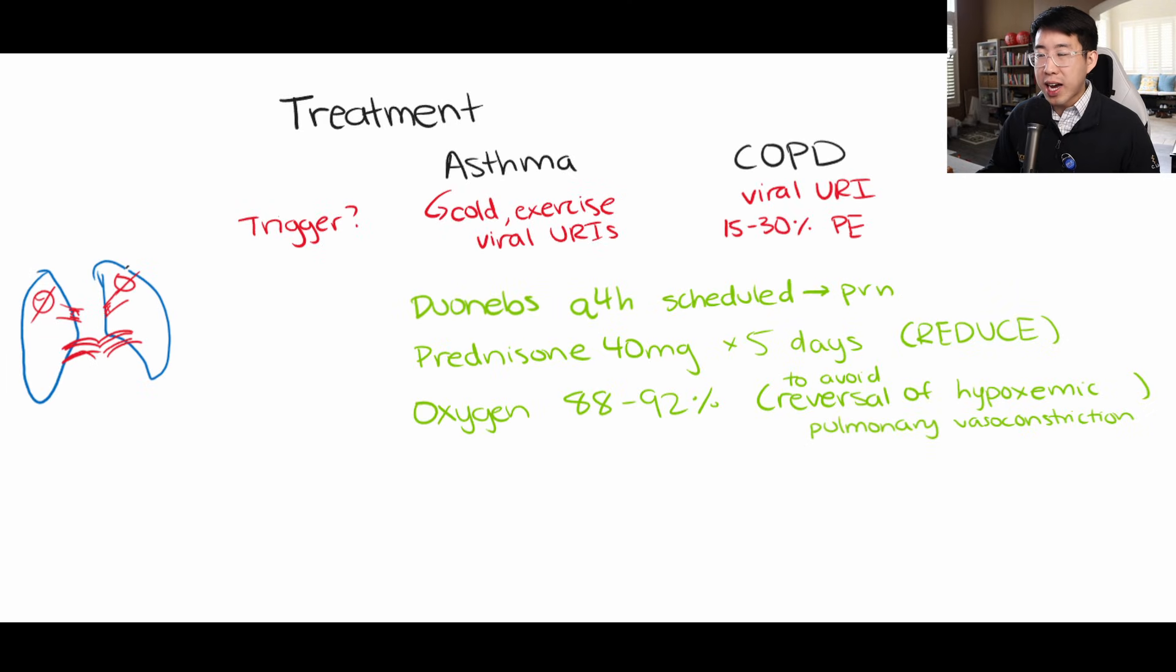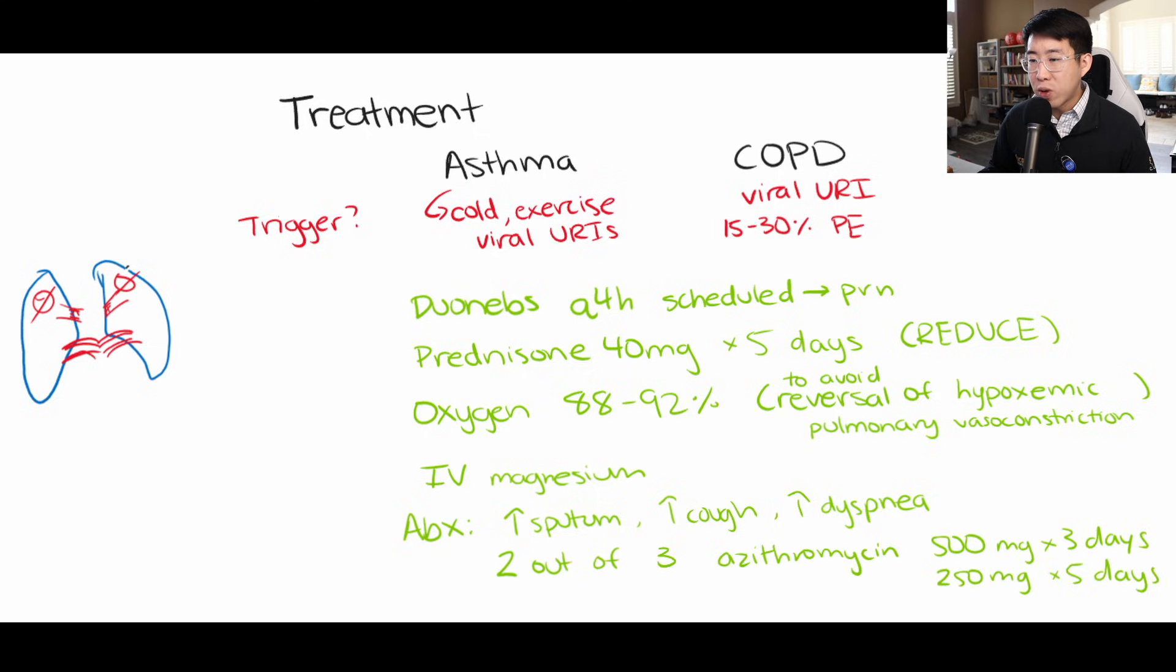The next treatment to consider in both asthma and COPD is actually IV magnesium. And then regarding antibiotics, how do you make that determination on whether a patient should be started on azithromycin or not? Obviously azithromycin not only to treat atypical pneumonias and things like that, but also because it's thought to have its own anti-inflammatory effect as well. So what you should determine is if they have increased sputum, increased cough or increased dyspnea. If you meet two out of three of these, then you can start azithromycin 500 milligrams for three days, or you can do 500 milligrams and then 250 milligrams times five days.